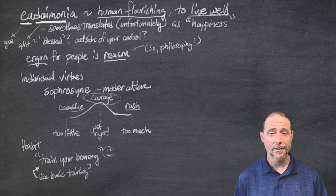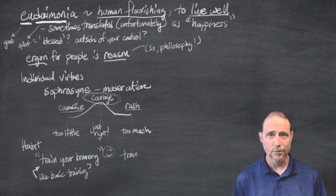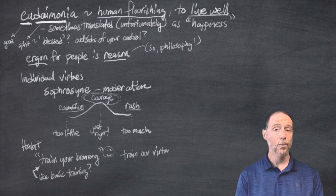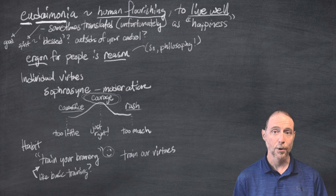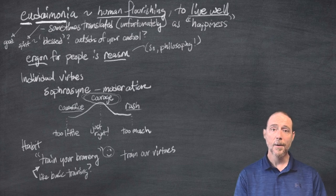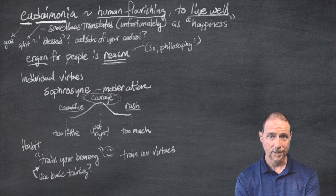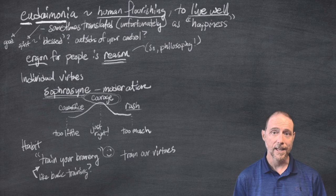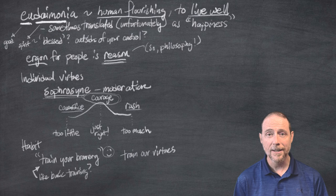That's how Aristotle thinks about it, is that we can train our bravery and that we can train our virtues in a variety of ways, such that we actually become better. We get closer to the good by virtue of exercising the excellences appropriate to our ergon. In other words, by exercising reason and by finding that middle ground, by finding the sophrosyne, then we are able to determine how to live courageously. And that happens by virtue of habit. We have to train ourselves to do this. It's not just a matter of an intellectual understanding. It's also a process of training.